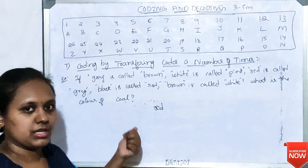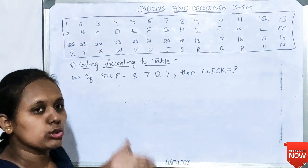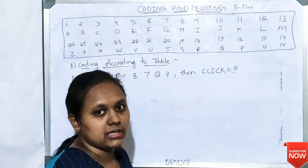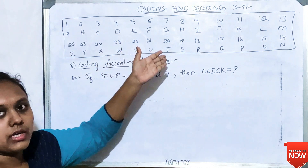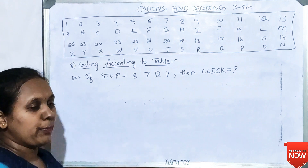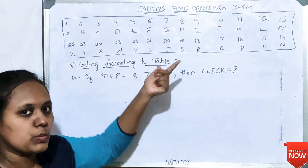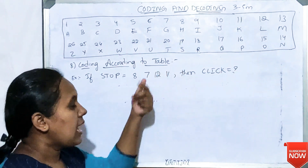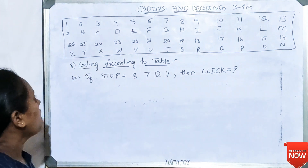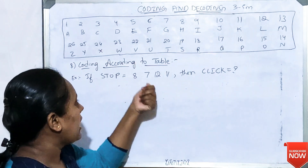This type of pattern is coding according to a table. This is important — the table appears in the exam for the first time and has a number of questions that are very important. For example: if STOP equals 8, 7, 12, 11, then what does CLICK equal?